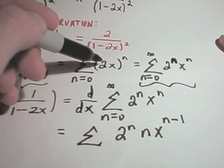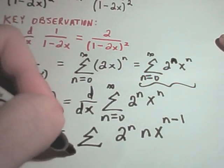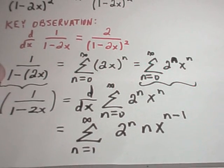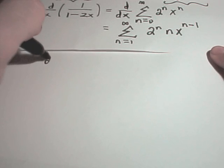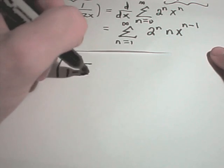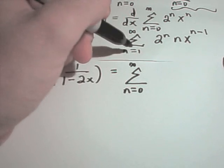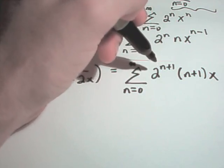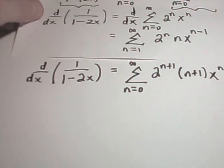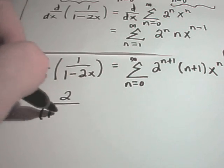Notice if I were to write out the original power series, my first term would be a constant, then something to the first power. When I take the derivative, I should get a constant as my first term, which means I'm going to need to start this series at n equals 1. I can actually rewrite this index — starting at n equals 0 — and if you decrease the index by 1, you need to increase everything else by 1. You can check: plug n equals 1 in the old form and n equals 0 in the new form, and everything starts at the right place. The derivative of 1 over 1 minus 2x is 2 over 1 minus 2x quantity squared.